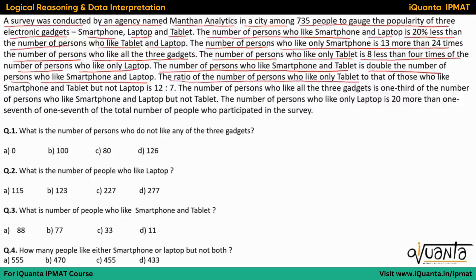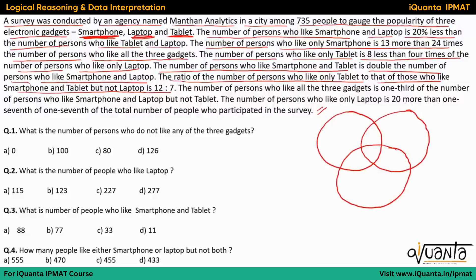The ratio of number of persons who like only tablet to those who like smartphone and tablet but not laptop is 12:7. When we read out this set we can see it is clearly based upon a three-set Venn diagram — one set for smartphone, one for laptop, and one for tablet. We just need to represent all these statements into a three-set Venn diagram, so let us form one. This circle will be for smartphone, this for laptop, and this one for tablet.